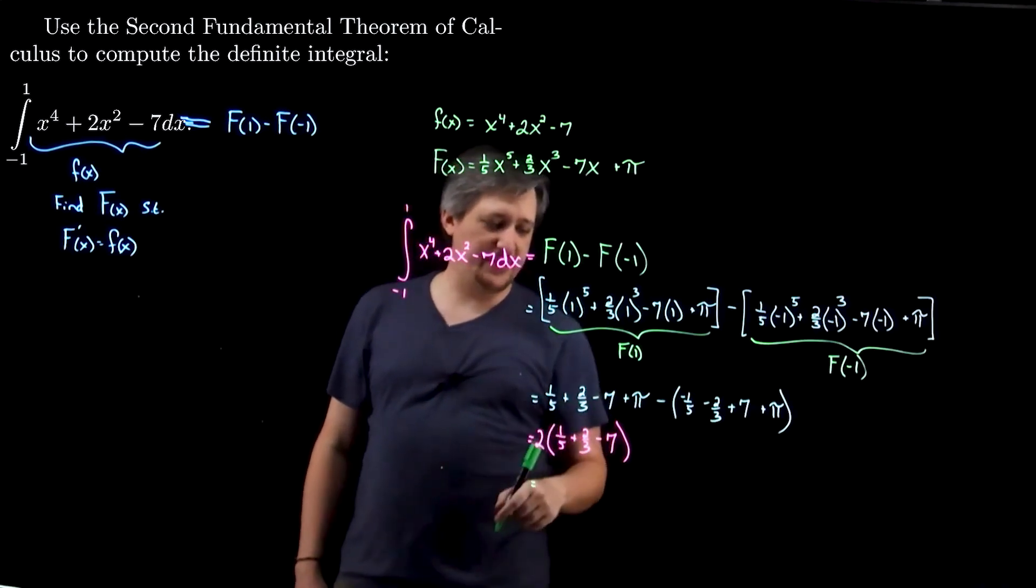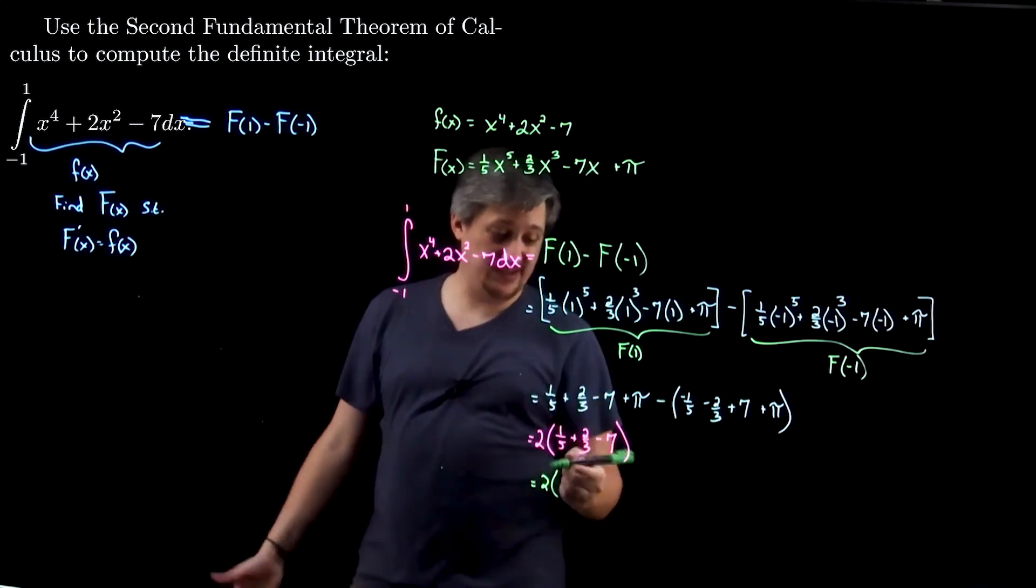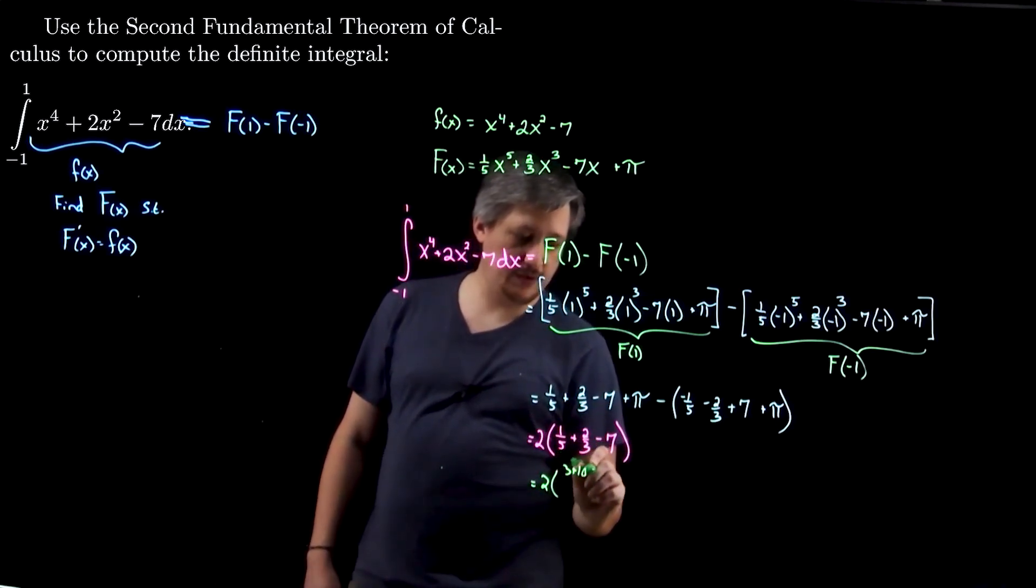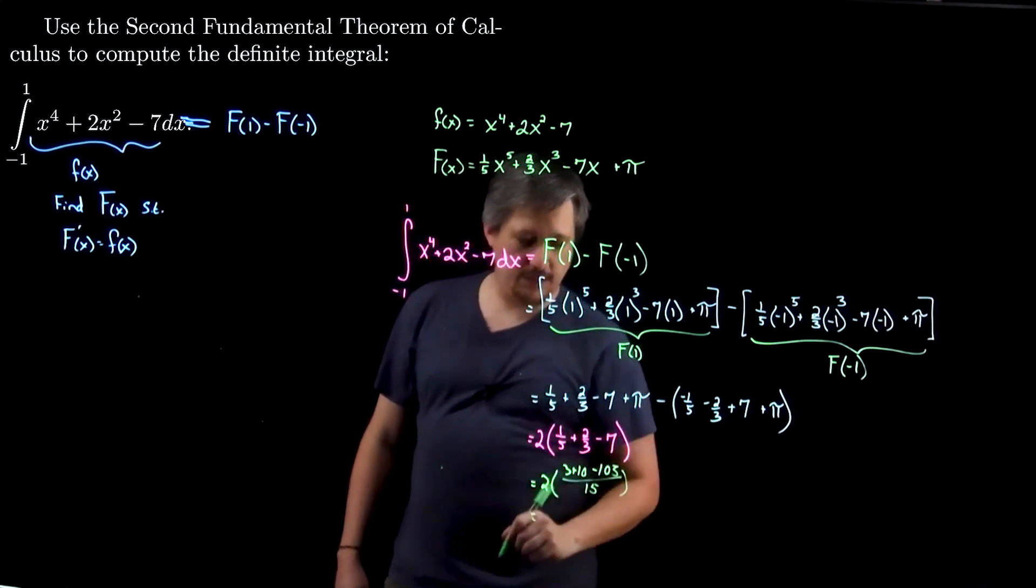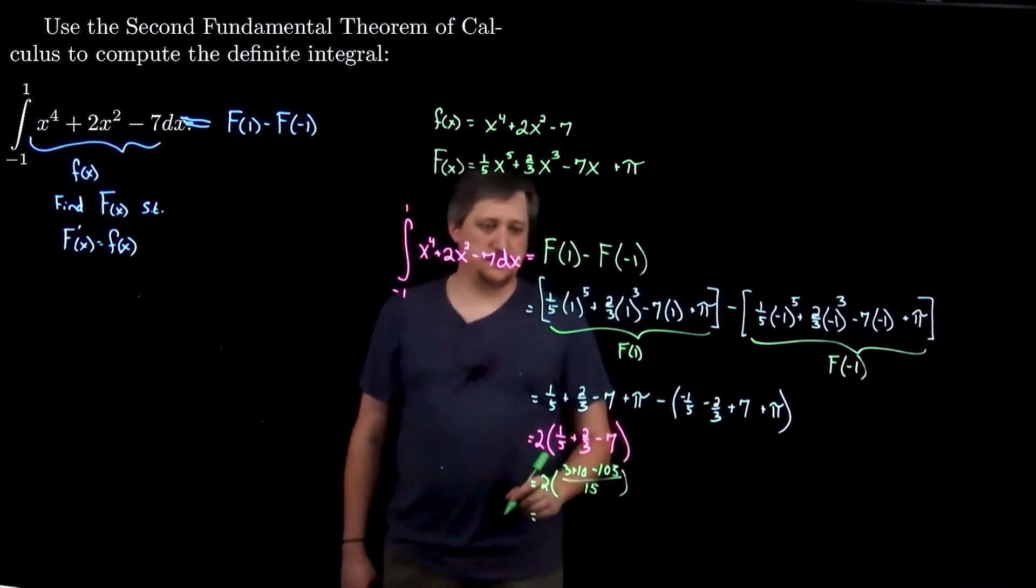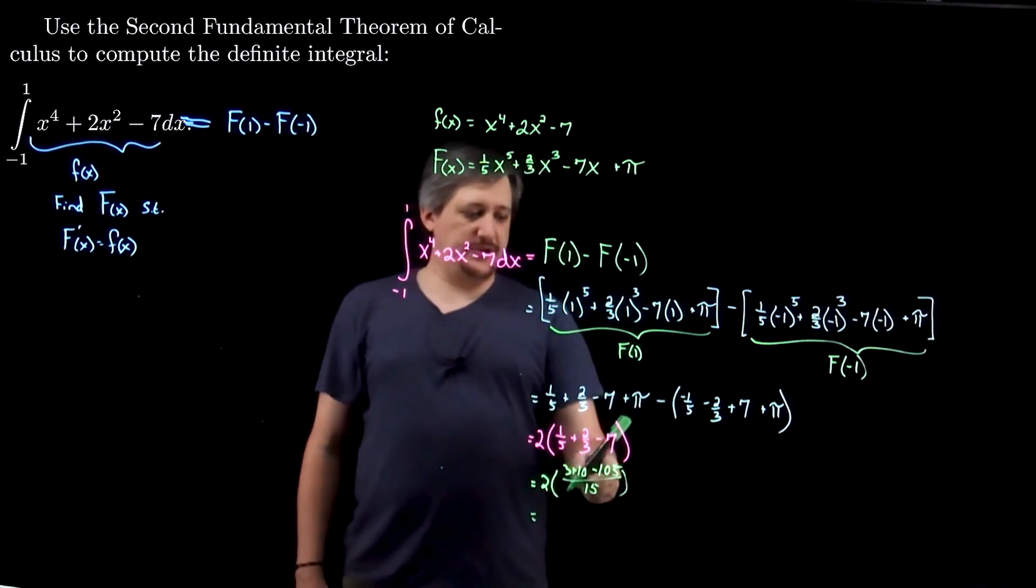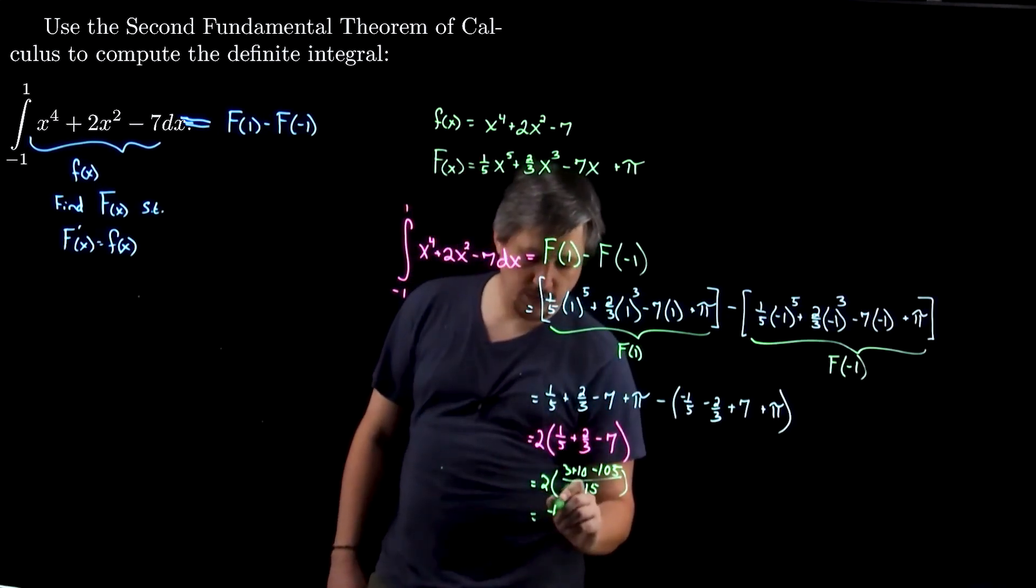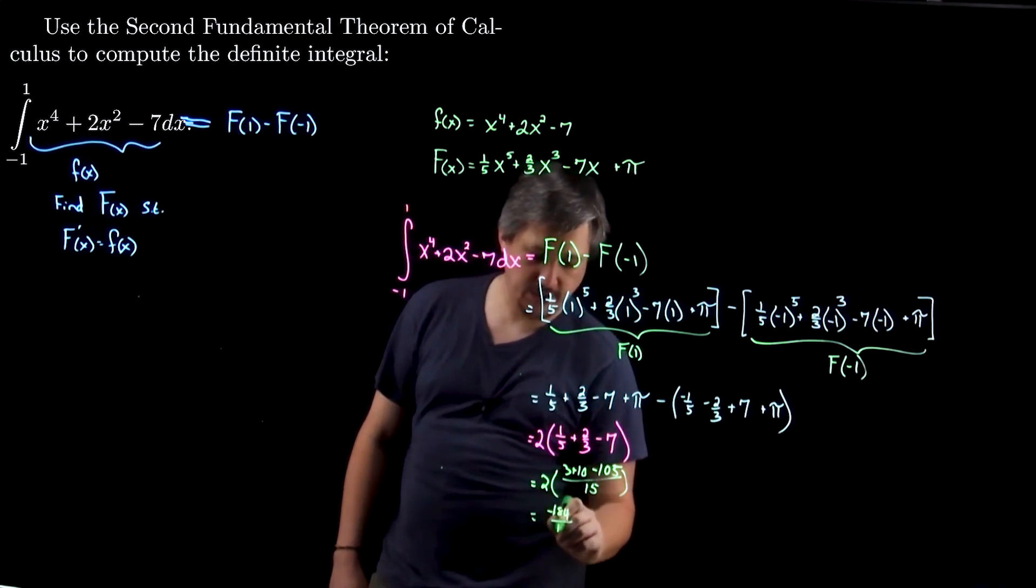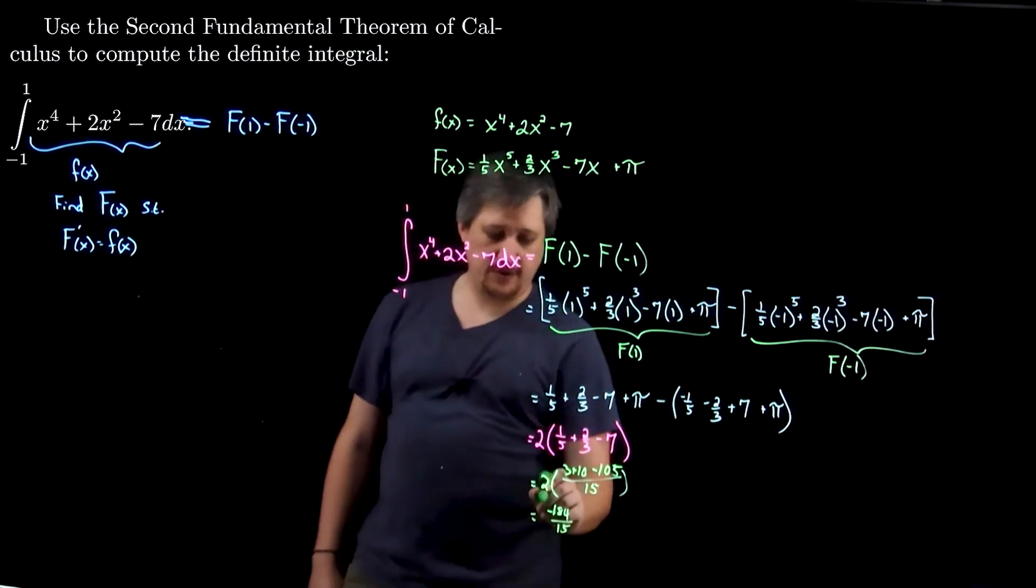But, I can put this together then. So, I'm going to get 2 times, let's see, common denominator would be 15. So, that's going to be 3 plus 10 minus 105 over 15. Which is going to get me what? So, that's 105. So, that's going to be 13 off of that, so that's going to be 92. So, negative 92 times 2 is negative 184 over 15. 184 is not divisible by 5 or 3, so that is my answer. Boom.